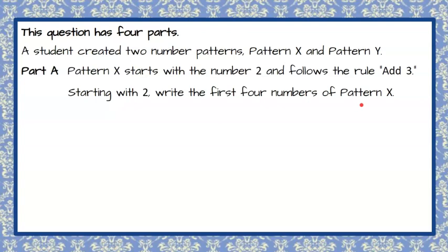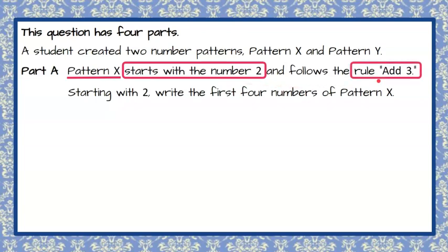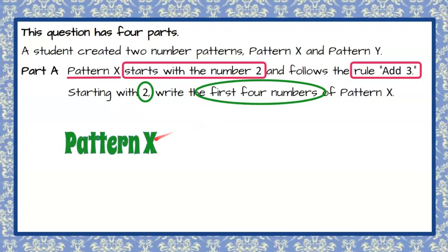Welcome back. So we know that for part A, we're going to work on pattern X and we're told to start with the number 2 and use the rule add 3. So once again, we're starting with 2 and we're going to write the first four numbers for pattern X. So pattern X begins with 2 and we need to put the first four values in our pattern.